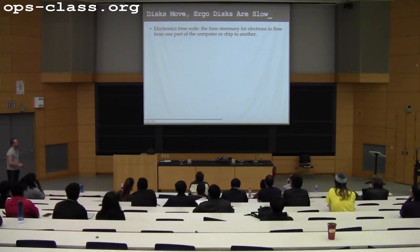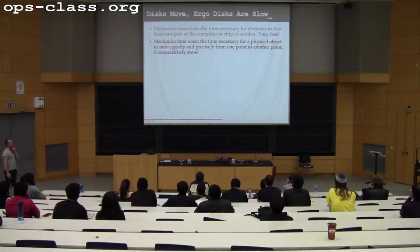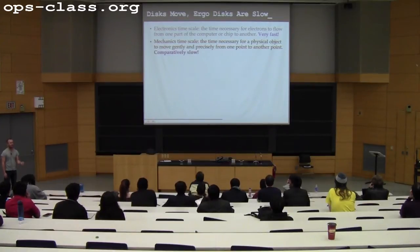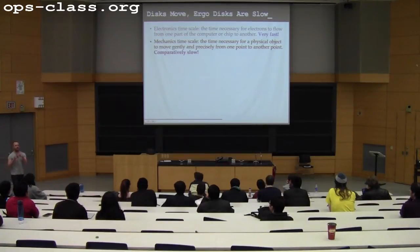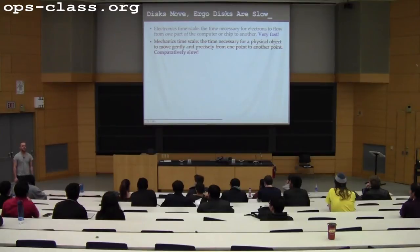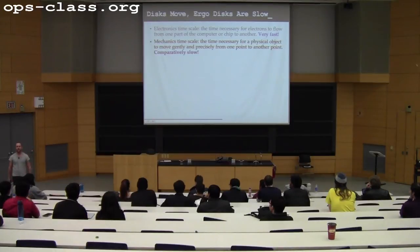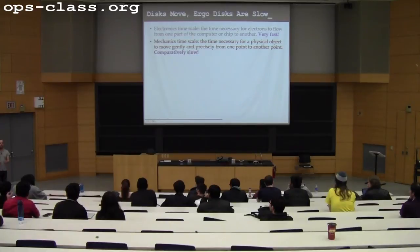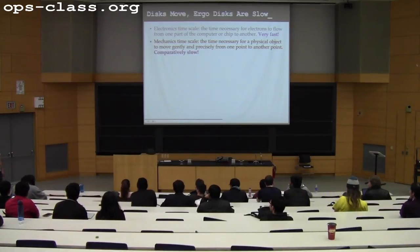Disks move and therefore disks are slow — particularly true when you compare with electronic timescales. Think about the time it takes for electrons to flow from RAM to the cache or into a register. That's electrons flowing through copper. On a disk, I've got to get this aluminum thing to move. There's no way you're going to win that race.